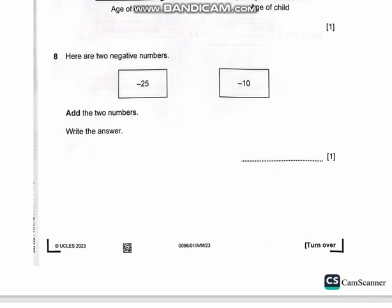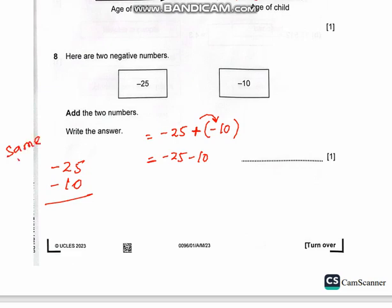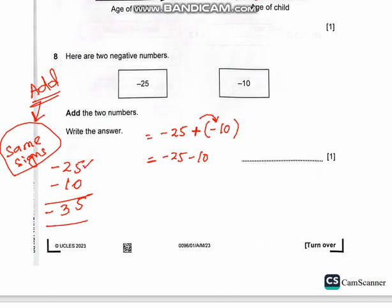Question number 8: here are two negative numbers, negative 25 and negative 10. Add the two numbers and write down the answer. So we write it as negative 25 plus negative 10. As it is a positive sign outside, it will have no effect on the sign inside, so we simply write negative 25 and negative 10. Now, negative 25 and negative 10 have the same sign. Whenever there are the same signs, you always add the numbers. So adding 25 and 10 gives 35, and since the largest number has a negative sign, the answer is negative 35.